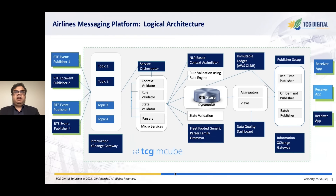This is a logical architecture diagram of the framework that shows the major building blocks. The entry point of the system is an information exchange gateway that is built using Amazon EventBridge service. Then we have the service orchestration tier, which is built using serverless lambdas and step functions.